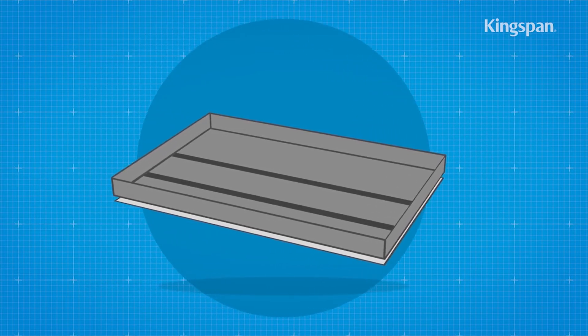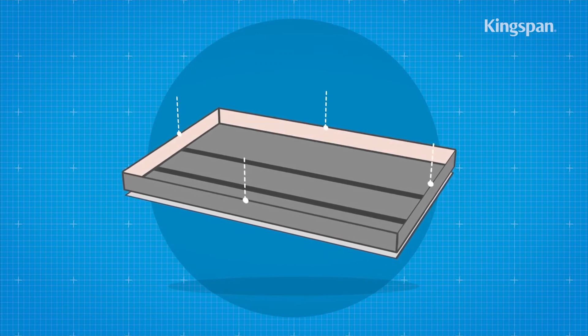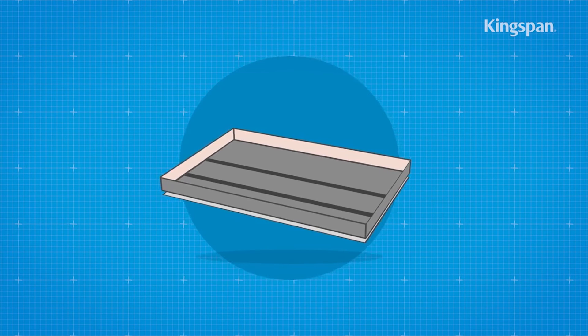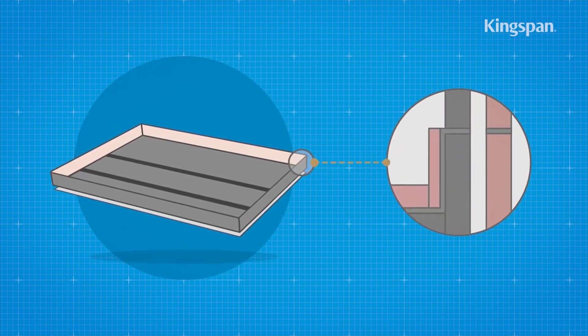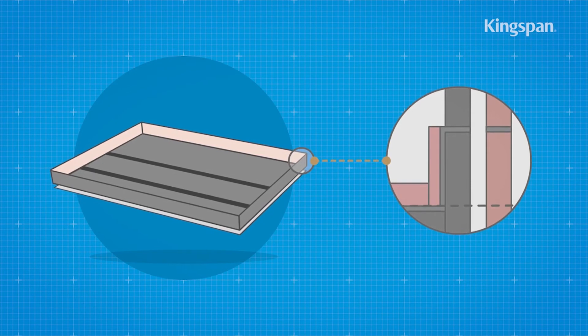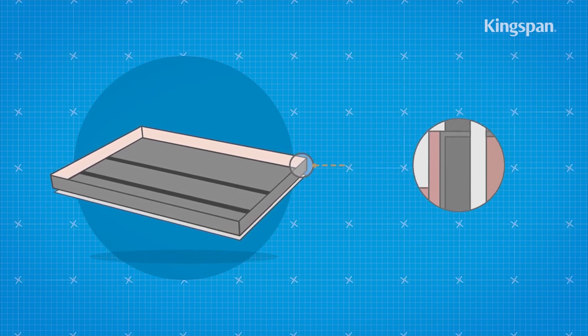A strip of appropriate insulation should be placed vertically around the perimeter of the room in order to prevent cold bridging. The top should be level with the top of the floor screed. The bottom should be level with the bottom of the horizontal floor insulation.